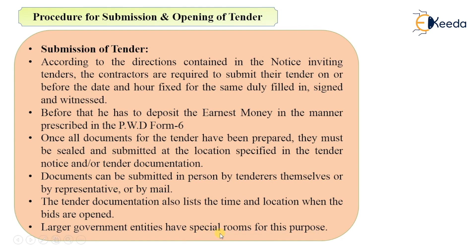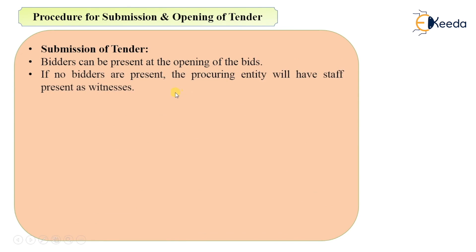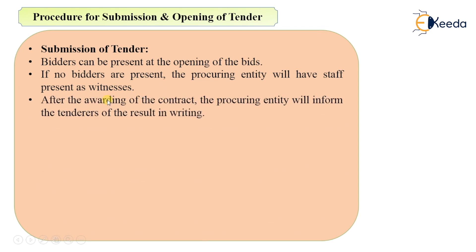Larger government entities have special rooms for the purpose of opening tenders. Bidders can be present at the opening of the bids. If no bidders are present, the procuring entity will have staff present as witnesses. Bidders or their representatives can attend the meeting at the time of opening the bids or tenders. After awarding the contract, the procuring entity will inform the tenderers of the result in writing.